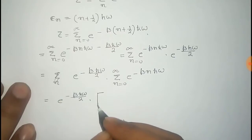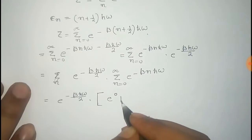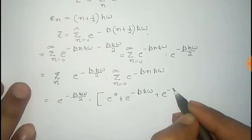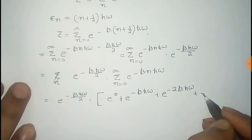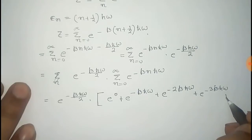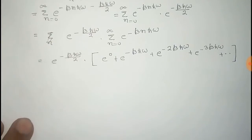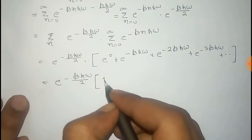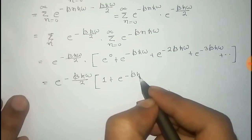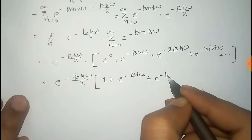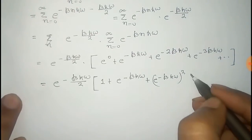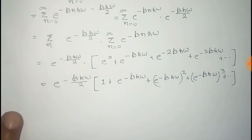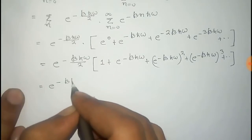If we expand this series in n, the first term has n equal to 0, the second term has n equal to 1 giving e to the minus beta h-bar omega, the third term has n equal to 2 giving e to the minus 2 beta h-bar omega, and the fourth term has n equal to 3. This gives us e to the power minus beta h-bar omega over 2, multiplied by 1 plus e to the minus beta h-bar omega plus e to the minus beta h-bar omega squared plus e to the minus beta h-bar omega cubed, and so on.